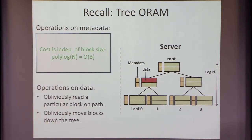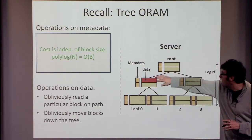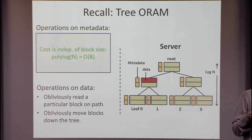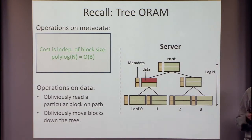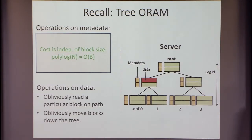Because the metadata is small, this is independent of the block size. It's polylogarithmic in communication, but if I make the block size big enough, this is order of the block size — much less than the size of one block. Making the block relatively big makes sense in many practical situations: if you have a file system, the files are reasonably big. You want to download a large block — that's not a big deal.